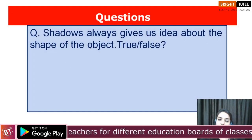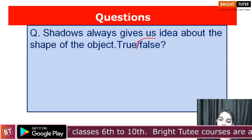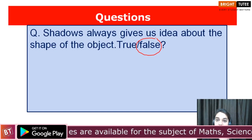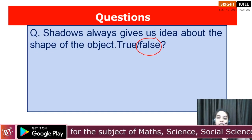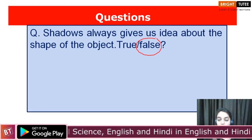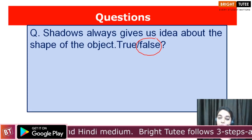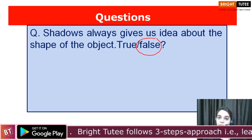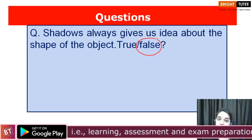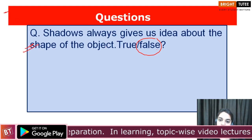Shadows always give us the idea about the shape of the object — is it true or false? This is false. Sometimes they do give us the idea about the shape, but in cases like when you create an image of a flying bird with your hands, we observe the shadow and see what looks like a bird — but is it really a shadow of a bird or just an illusion? It was just an illusion created with our hands. So sometimes these shadows can be misleading. The answer is false.